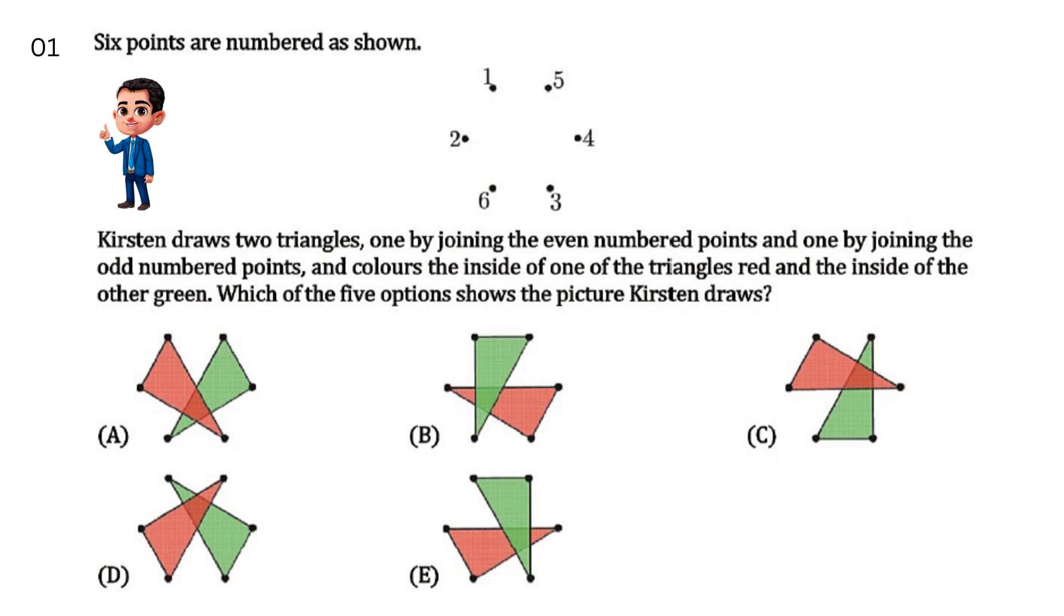Which points show that Kristen made the correct triangles? Your options are A, B, C, D and E. Your answer is E.